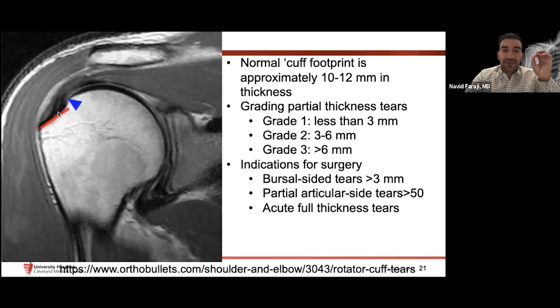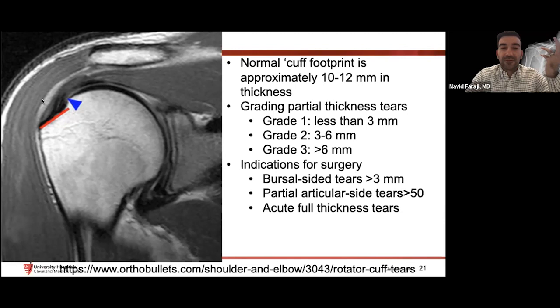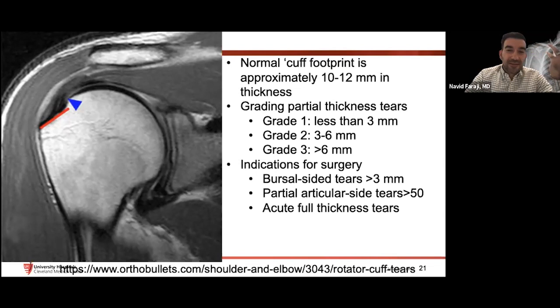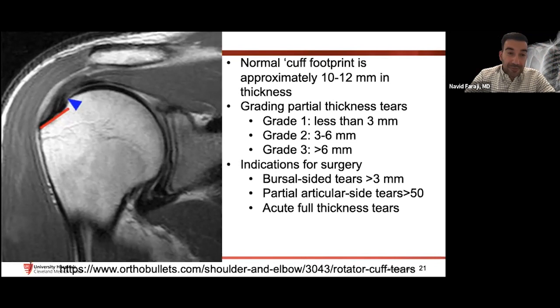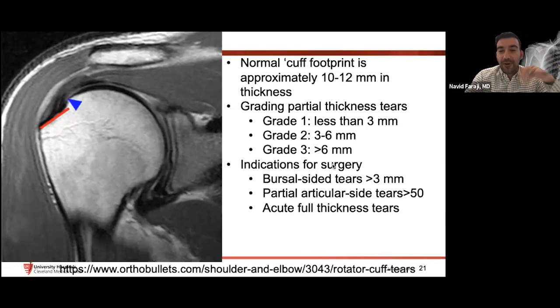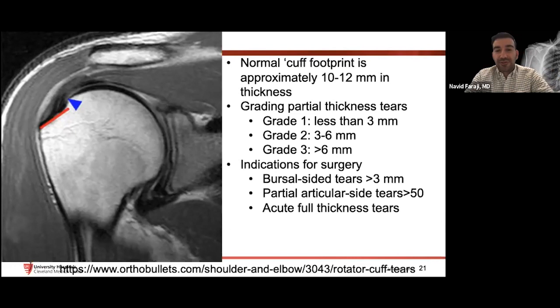The footprint of the supraspinatus tendon is about 10–12 mm in most people. Less than 3 mm of tearing is grade 1, 3–6 mm is grade 2, and greater than 6 mm is grade 3. Surgical indications include: bursal-sided tears greater than 3 mm, partial articular-sided tears greater than 50%, and acute full-thickness tears. We want to describe how much tendon thickness is torn, whether it's bursal or articular, whether it's acute or chronic, and document muscle atrophy to guide management.